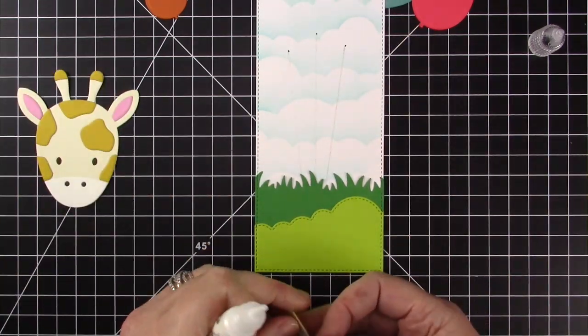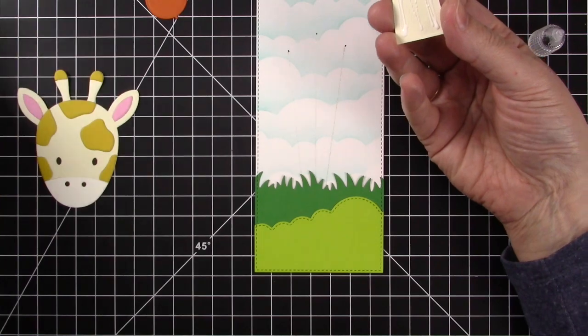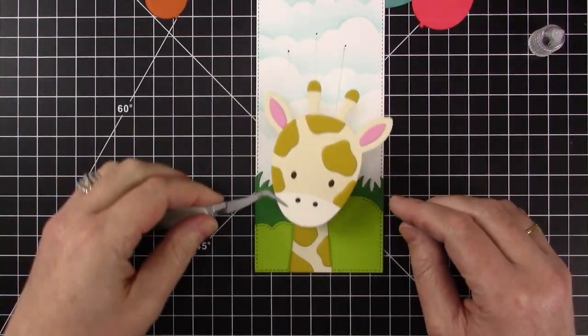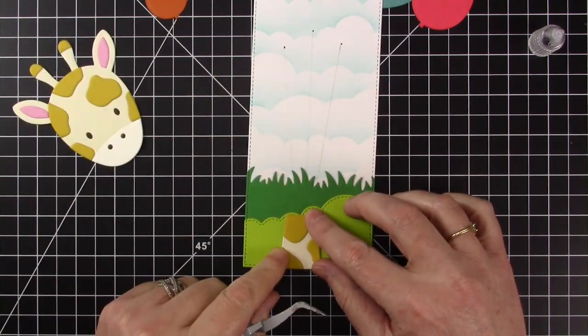I'm doing a quick position of the giraffe before I glue down the neck and then I'm going to be using thin foam squares for the giraffe's head.